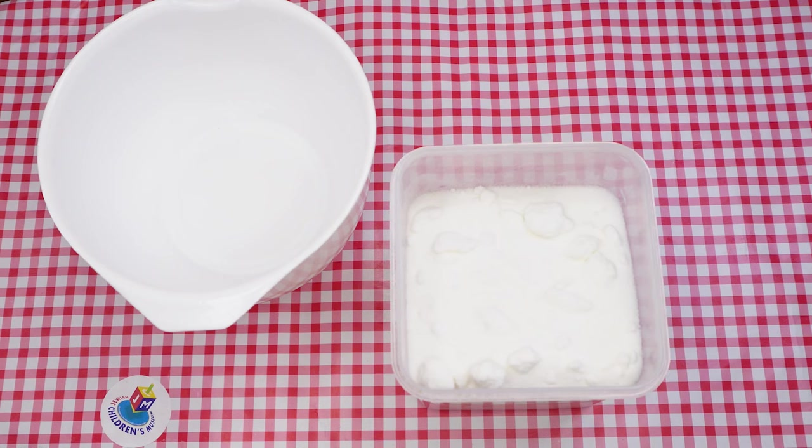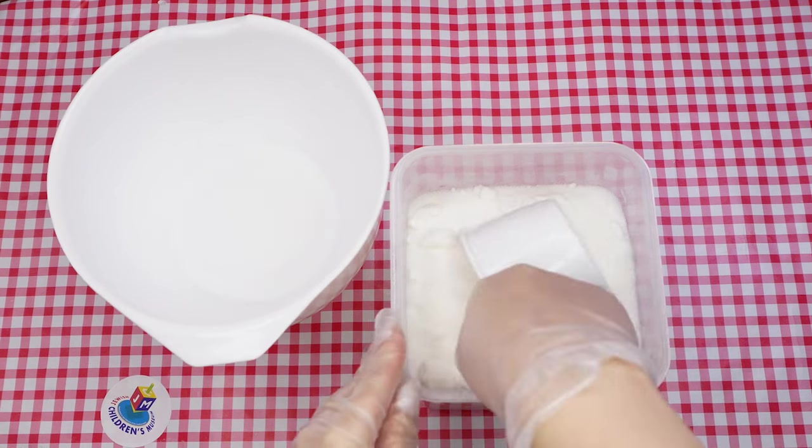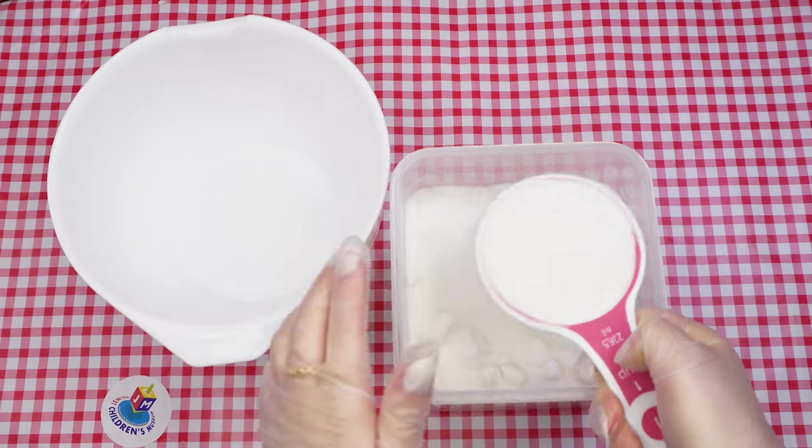Measure out one and a quarter cups of sugar into the bowl. Start with measuring first the one cup, then the quarter cup.